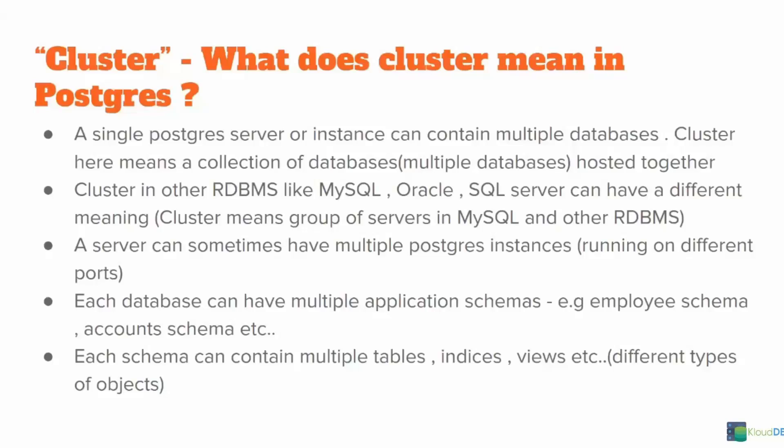A server can sometimes have multiple Postgres instances running on different ports, and each database can have multiple schemas. For example, employee tables can be stored in a schema called employee and accounts tables in different schemas. Inside a database, you can have multiple schemas, and each schema can contain multiple objects like tables, indexes, views, etc. So that is the hierarchy in Postgres: cluster, which is a group of databases; each database has multiple schemas; and each schema has multiple objects.